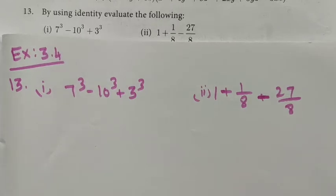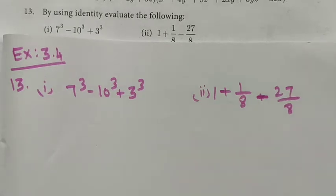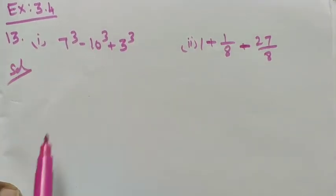Hi students, Class 9, Exercise 3.4, Question 13 — evaluate the following using identity. The first expression is 7 cube minus 10 cube plus 3 cube. The second expression is 1 plus 1 by 8 minus 27 divided by 8.